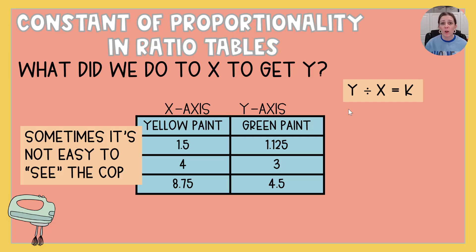Well, we know where y came from. That's the y-axis. We know where x comes from, the x-axis. What in the world is k? K is the variable, the letter that we use to talk about the constant of proportionality, to represent the constant of proportionality.